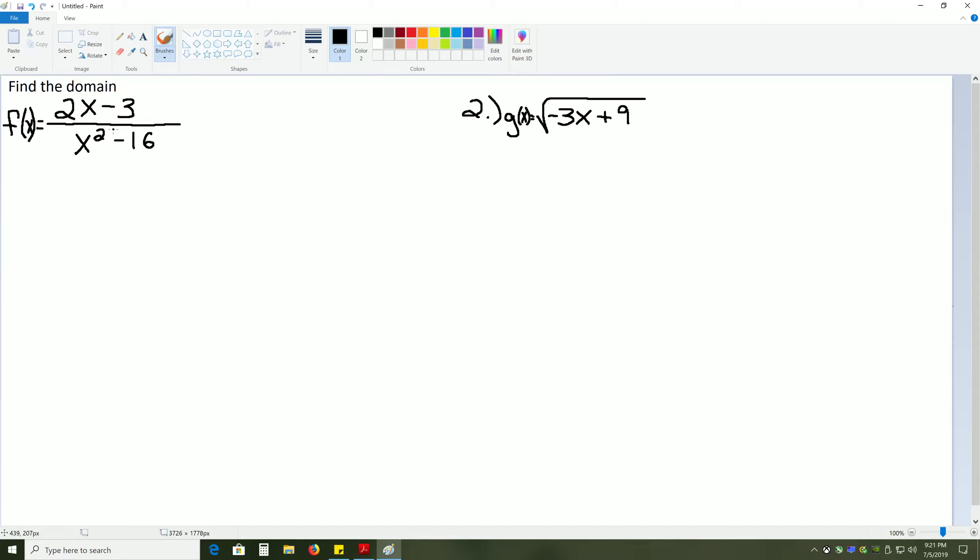When you're finding the domain, there are two things to look out for: denominators, in this case the x squared minus 16, and also square roots. If a problem only has a fraction, meaning a denominator here, then that's the only thing we need to worry about.